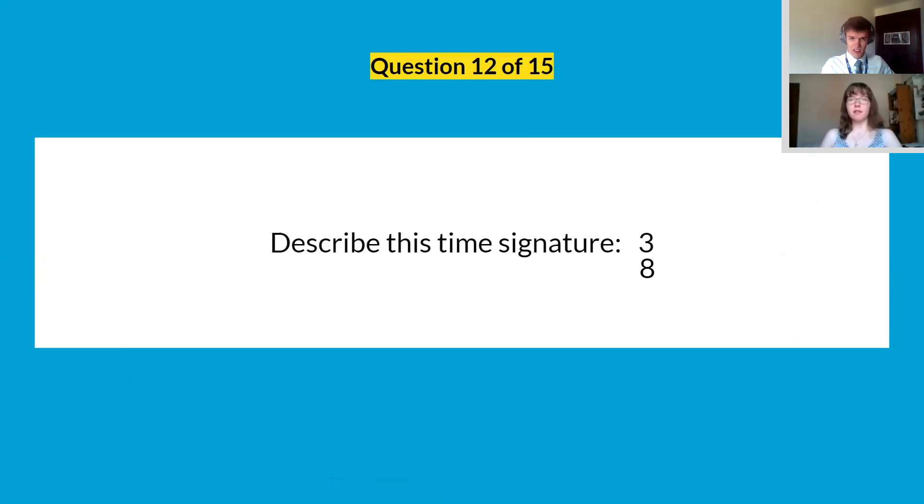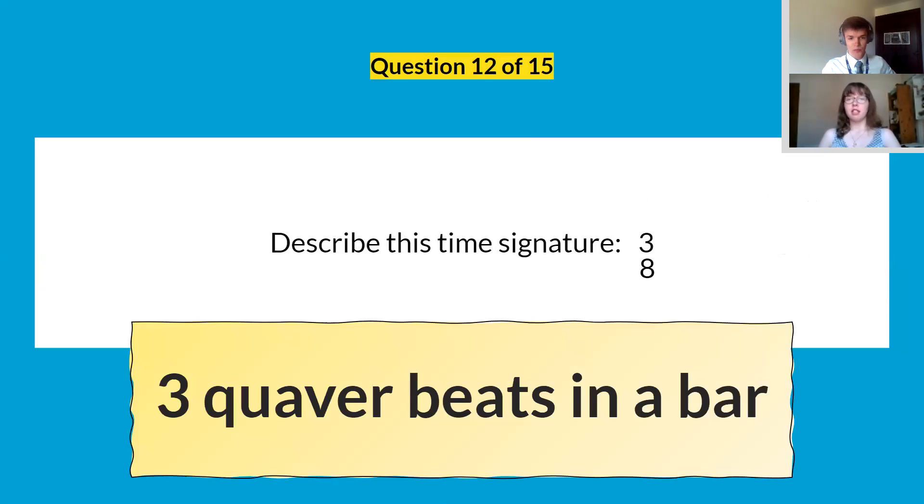Question twelve, describe this time signature, we have three quaver beats in a bar. So unlike other time signatures with eight at the bottom where we count in dotted crotchets for our overall beats, we just have three quavers. It sounds a bit like three four.